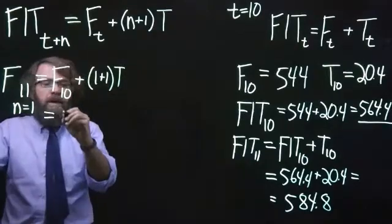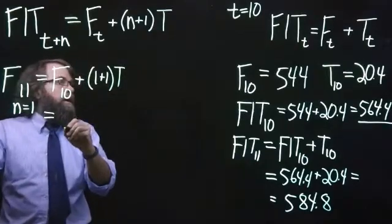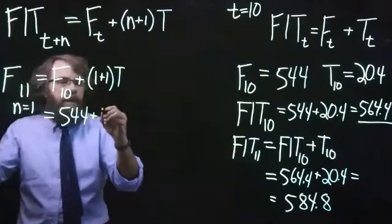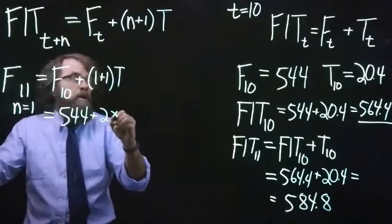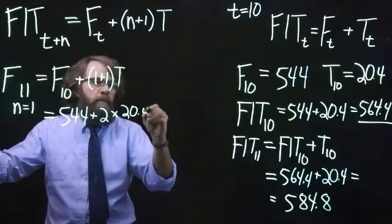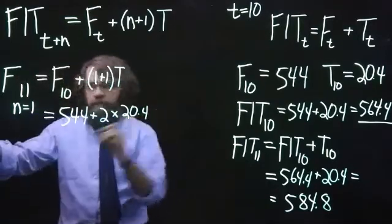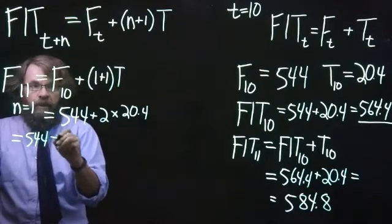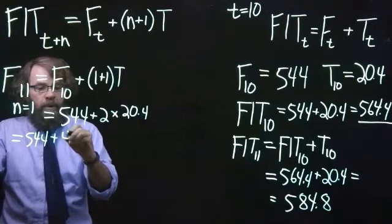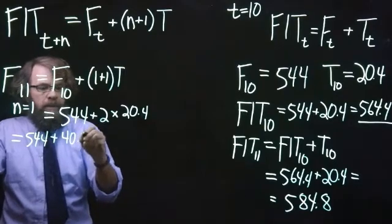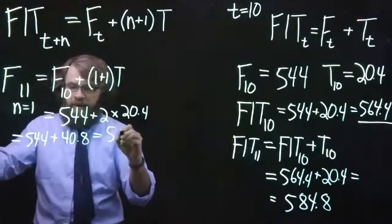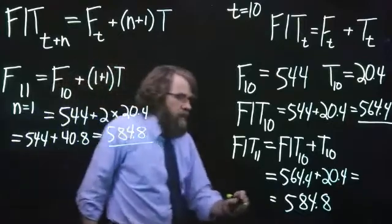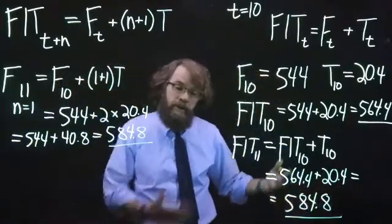So we get 544 as our current level, then we have 2 times 20.4. So 544 plus 2 times 20.4 is 40.8, giving us 584.8. We can verify that it's the same answer I got a few minutes ago when talking about period 11.